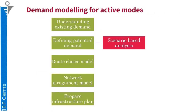Modeling demand for active modes will require an alternate approach. This would include: first, understanding the existing demand for active mobility in the city; second, defining potential demand, which can be estimated using alternate scenario-based analysis; third, doing a route choice model to understand how people make their choices for different routes; and fourth, preparing a network assignment model where the estimated demand is distributed on different road network links. After this, we can prepare our infrastructure plan.